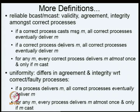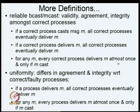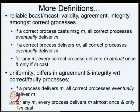In reliable broadcast MCAST, we say: if a correct process casts message M, all correct processes eventually deliver M. If one of them delivers it, other correct processes also receive it. Every correct process delivers M at most once, and only if M was cast. This at-most-once guarantee is also non-trivial — in NFS for example you cannot really do this. You need logging. Because with retransmission, if the action did not go through but the message did, you can get more than one copy, so the receiver must track and drop duplicates.